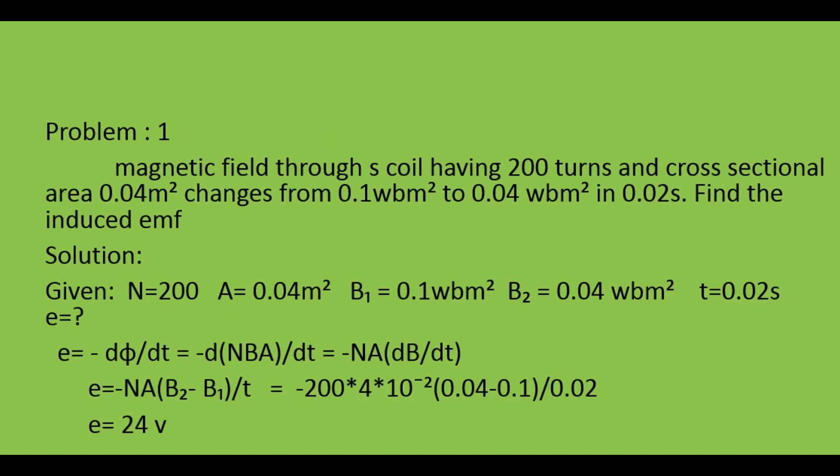Now we see some problems. Problem 1: A magnetic field through a coil having 200 turns and cross-sectional area 0.04 meter squared changes from 0.1 Weber per meter squared to 0.04 Weber per meter squared in 0.02 second. Find the induced EMF. Given values: number of turns N equals 200, area A equals 0.04 meter squared, B1 equals 0.1 Weber per meter squared, B2 equals 0.04 Weber per meter squared, time T equals 0.02 second. Find E.